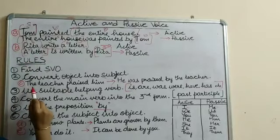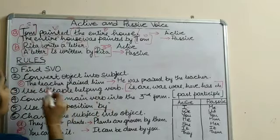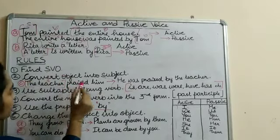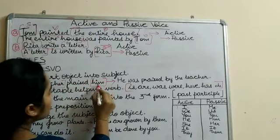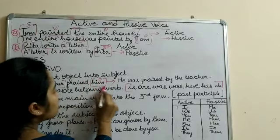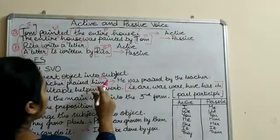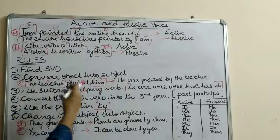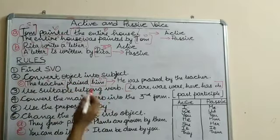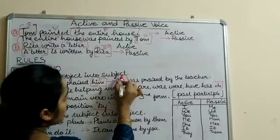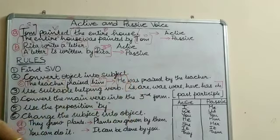For example: 'The teacher praised him.' The teacher is the subject and him is the object. Him is a pronoun — words which we use instead of nouns. When we convert this sentence into the passive voice, the object becomes the subject. So 'him' becomes 'he' and takes the subject position.